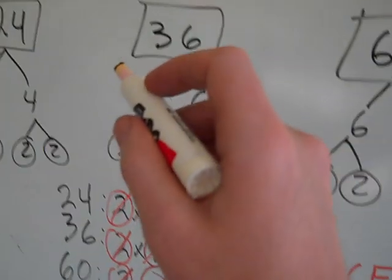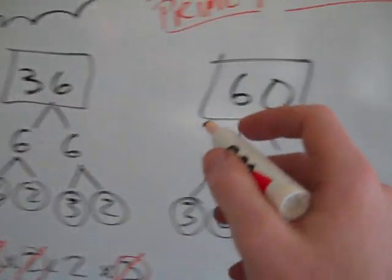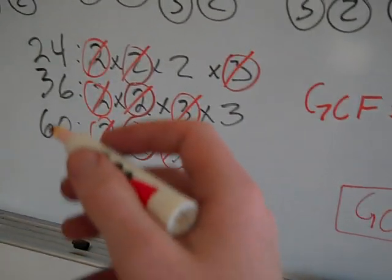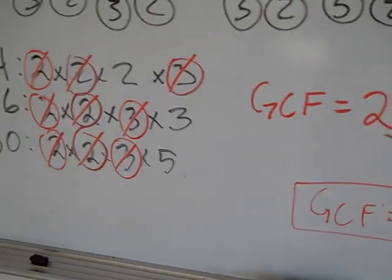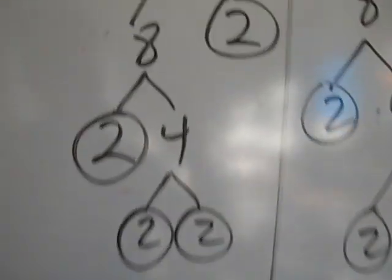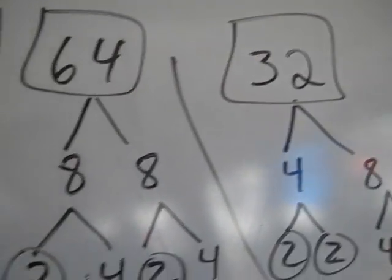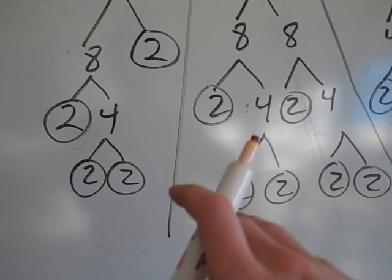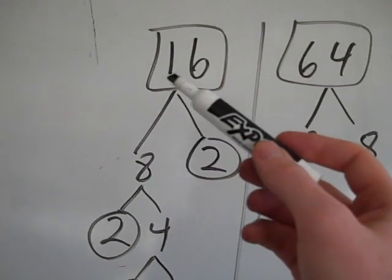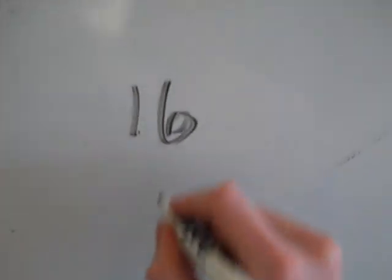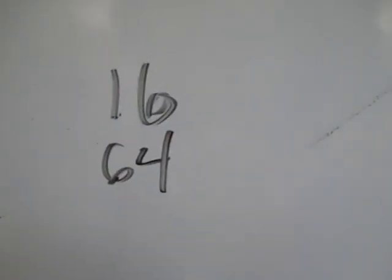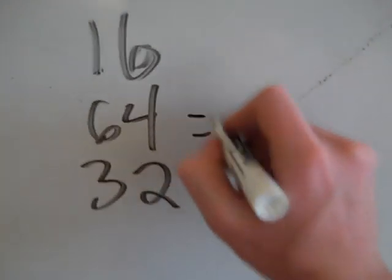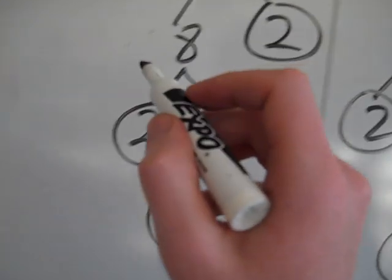So 12 is the biggest number that goes into 24, 36, and 60. That's how you can find it using prime factorization. I'll show you two other examples real quick. I've already done the factor trees for you. Here I have 16, 64, and 32. I've made factor trees and gotten prime numbers on the ends of the branches. Now I'm going to write their prime factorizations. We've got 16, we've got 64, and we've got 32. So 16's prime factorization was 2 times 2 times 2 times 2 — four 2's.